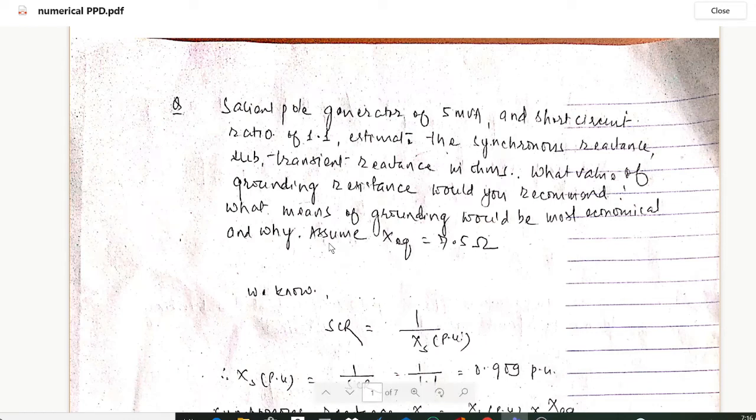Hello guys and welcome to my channel. Today I am back with another important numerical on power plant design. Here we have a numerical: a salient pole generator of 5 MVA and short circuit ratio of 1.1 is given here.